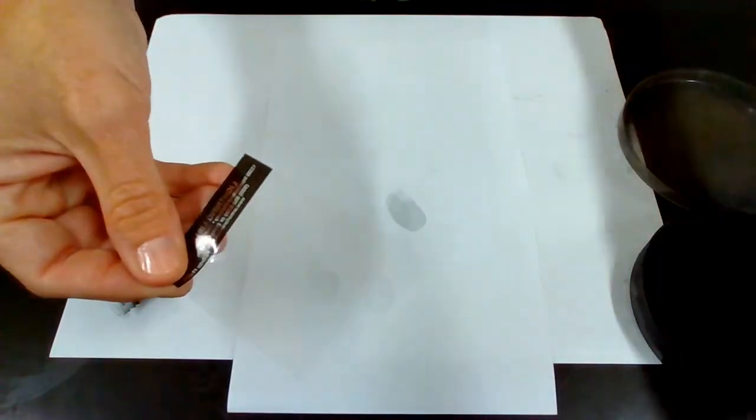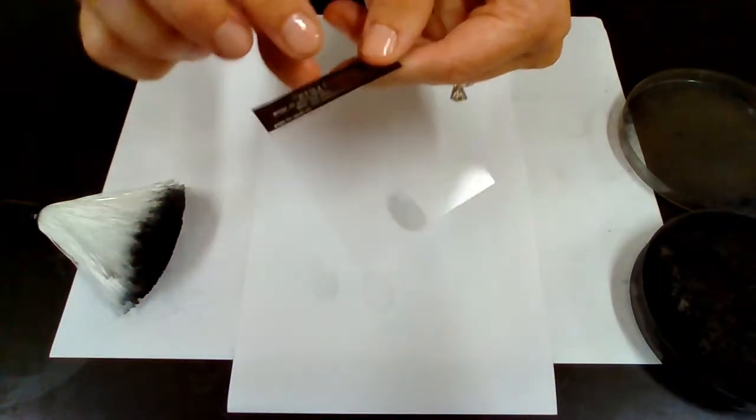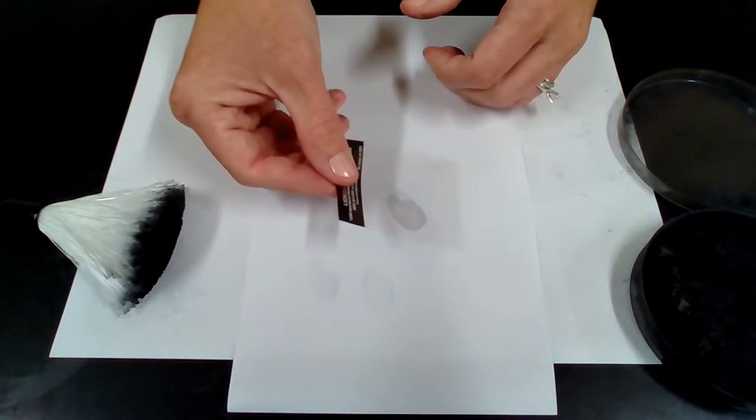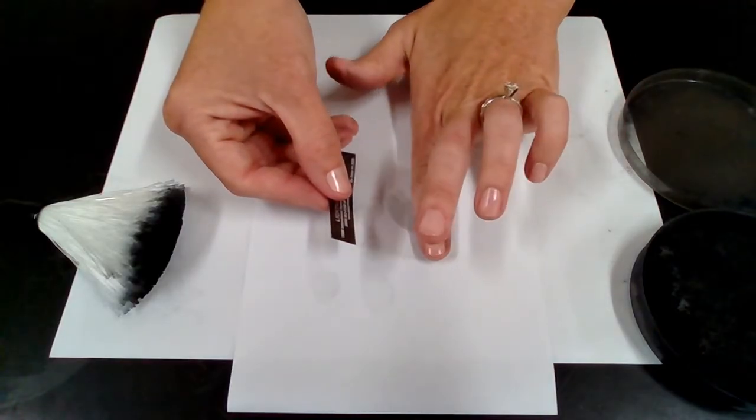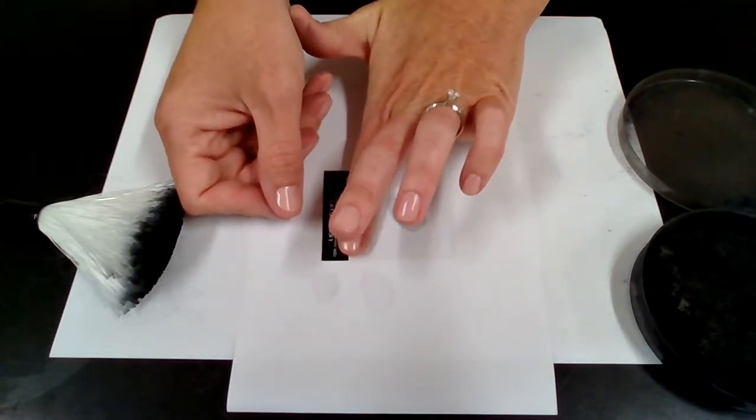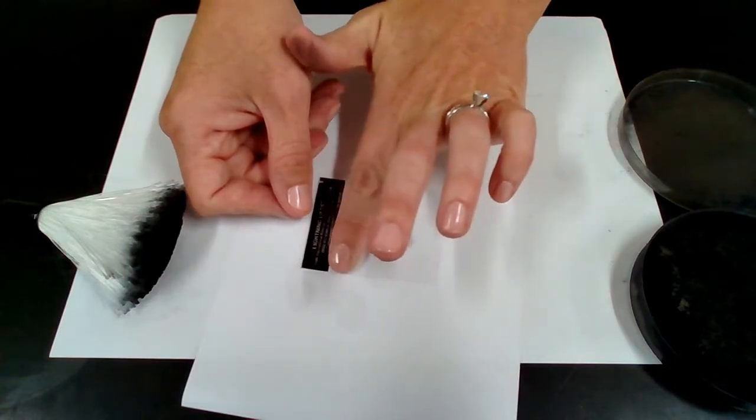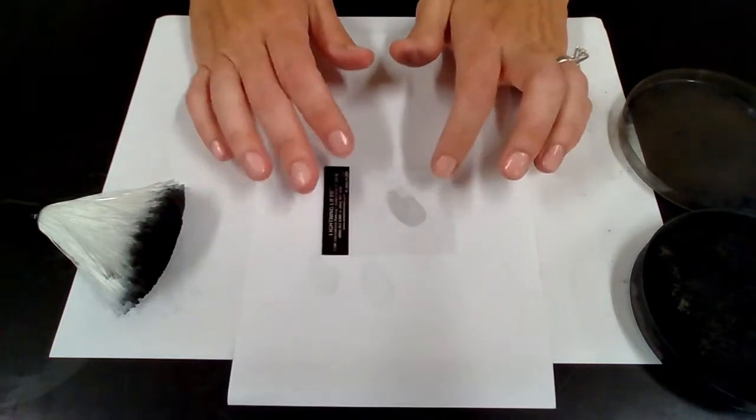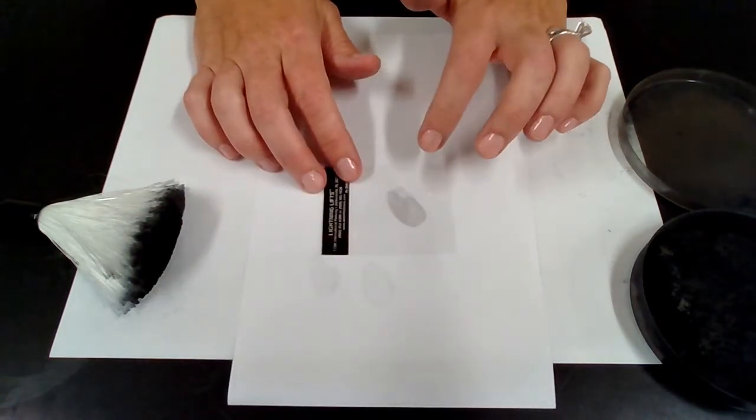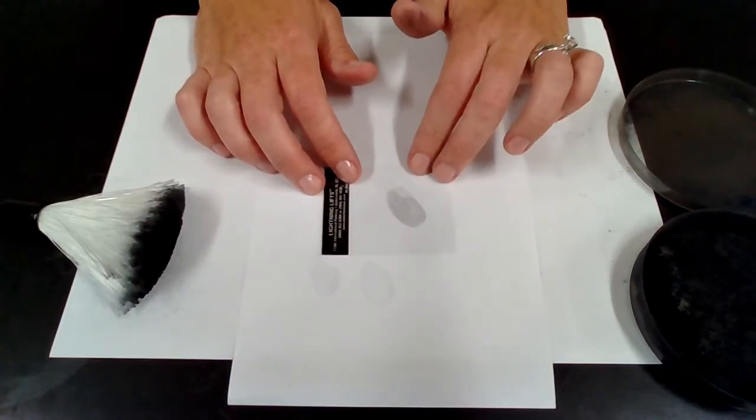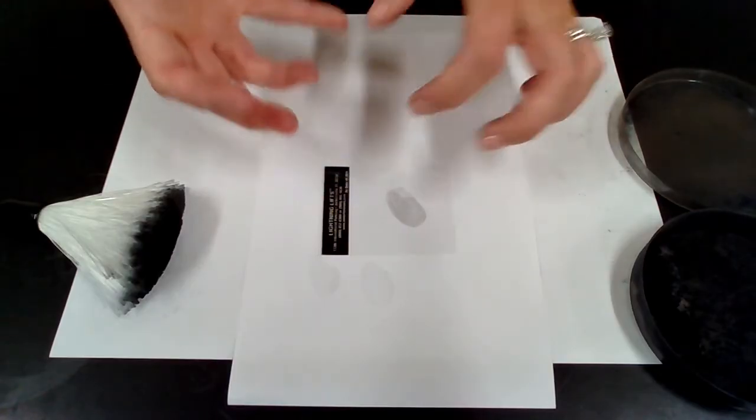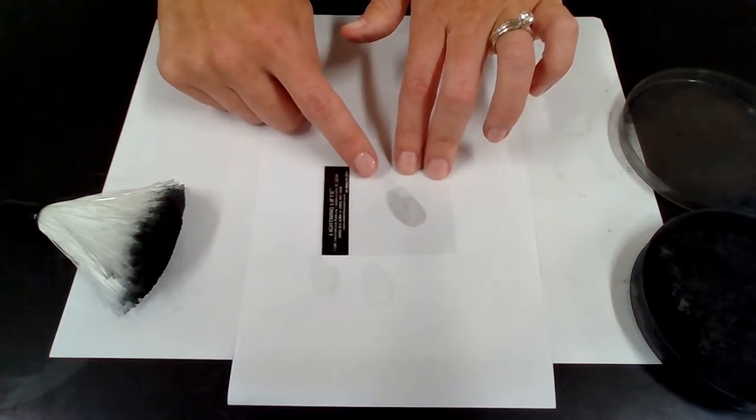I'm going to peel off that top layer to expose the sticky side. I'm going to press down starting on one side and go all the way across. Due to the nature of the paper and that the lift tape could potentially stick directly to the paper, I want to minimize pulling the paper up. I really just want to take the print up. So I'm not going to press too hard or use my scraper as much this time.